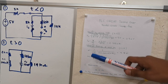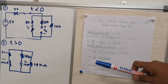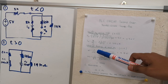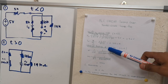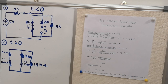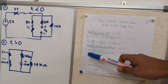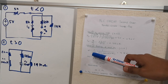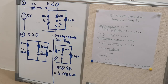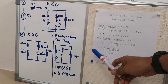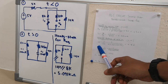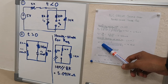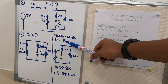Step two: to find the values for T greater than zero, we will find alpha and omega. Alpha's equation is 1 over 2RC.